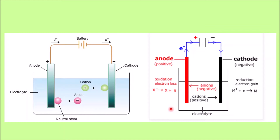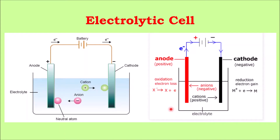Hello everyone, welcome to Chemazon Complete Chemistry. Our today's topic is electrolytic cell. In this video we are going to learn what are the basic components of an electrolytic cell, and we will also see the signs of the electrodes — that is anode and cathode — why the signs are opposite in case of electrolytic cell and galvanic cell, and also we will see how to write down the basic reactions of an electrolytic cell.